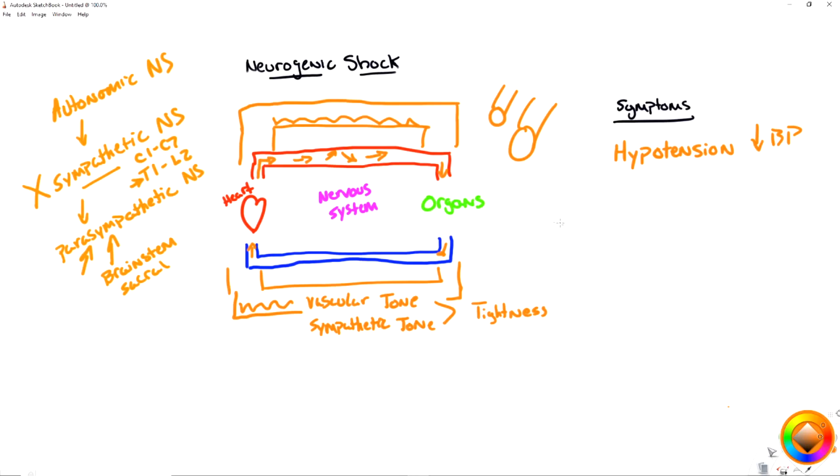The second thing that we're going to see is because of this hypotension, typically the sympathetic nervous system would jump in and say, hey, heart, speed faster. There's less blood. We need to move it quicker to keep up perfusion. But the parasympathetic nervous system is in charge right now. And it says, slow everything down.